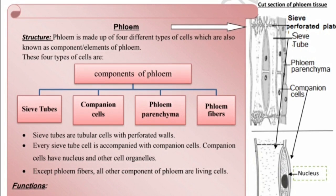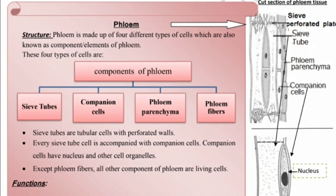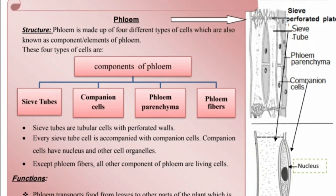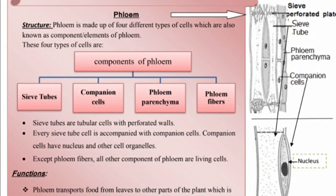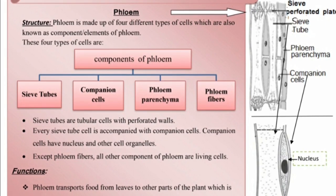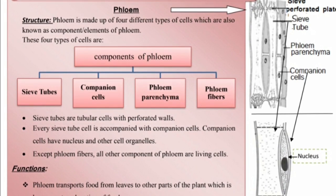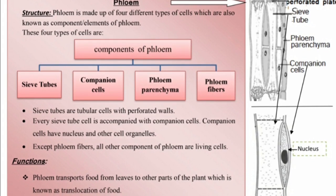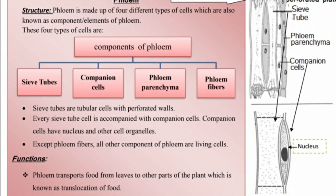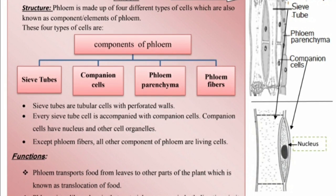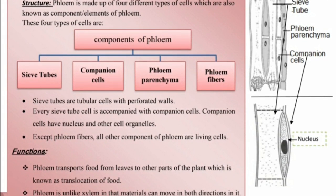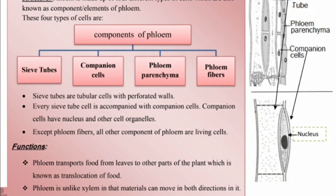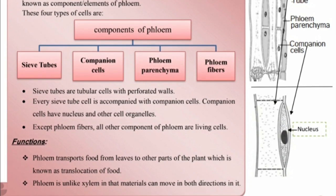Sieve tubes are tubular cells with perforated walls. Every sieve tube cell is accompanied by a companion cell. Companion cells have a nucleus and other cell organelles. Except phloem fibers, all the components of phloem are living cells.